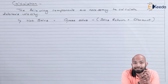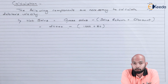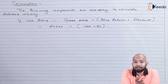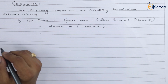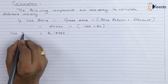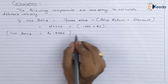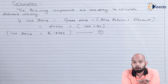As mentioned in the question, gross sales amounts to Rs. 20,000, sales return amounts to Rs. 1,000, and the discount provided on sales was Rs. 50. So net sales has been figured out as Rs. 18,950.